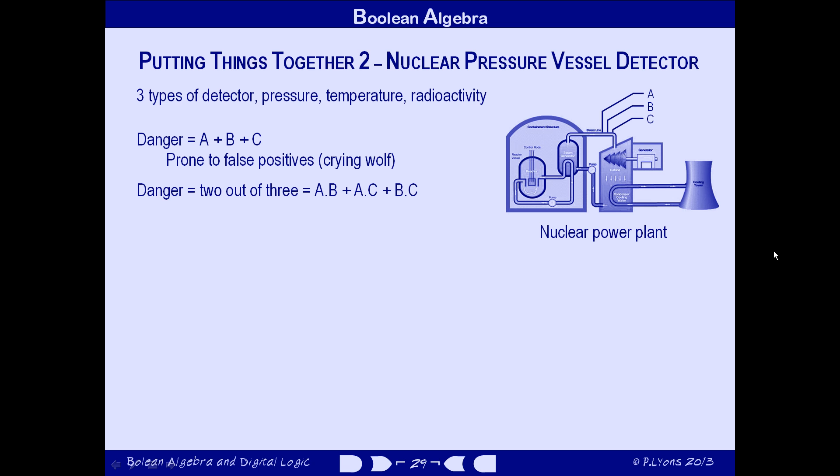So we're going to produce a signal called disagree. When one detector says, or two detectors say, that there's a problem. We draw up a truth map, a truth table in Karnaugh map format. There's no disagreement if all of the sensors are signaling no problem, and there's no disagreement if all of the sensors signal that there is a problem. But in every other case there is a disagreement. So we fill in the rest of the table with ones.